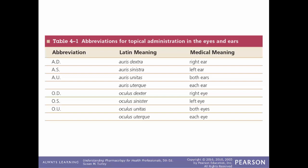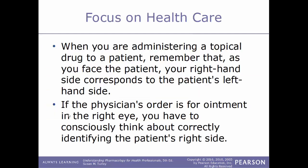Common abbreviations for topical administration are based on Latin terms. The abbreviation AD is Latin for auris dextra, meaning right ear; AS is auris sinistra, or left ear; and AU is auris utrius, or both ears. For the eyes: OD is oculus dexter, right eye; OS is oculus sinister, left eye; and OU is oculus utrius, meaning both eyes. These letters are commonly seen when prescribing ear drops or eye drops.